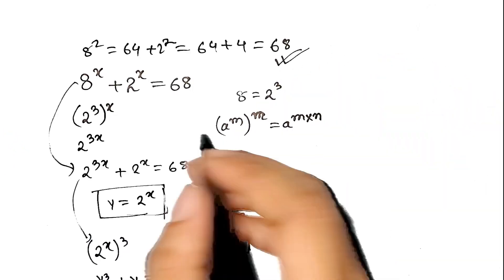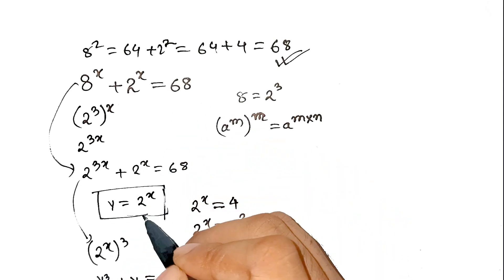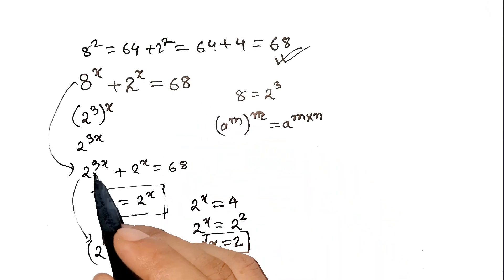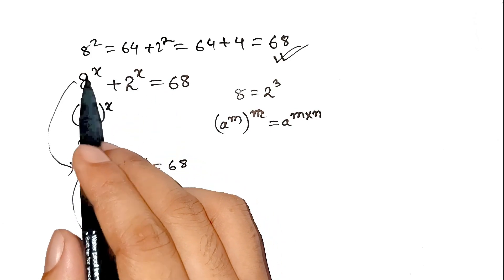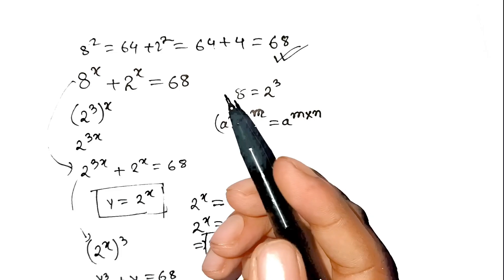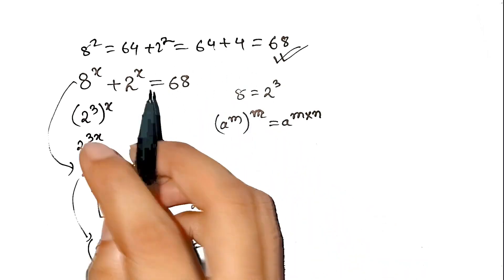Now let's rewind for a second. Imagine if you didn't think of substituting y. Some of you would be sitting there trying to directly solve 8^x + 2^x = 68. Like, uh, maybe x = 1. No. Maybe x = 3. No. Maybe x = 17. That's when math just looks at you and says, bro, do better.